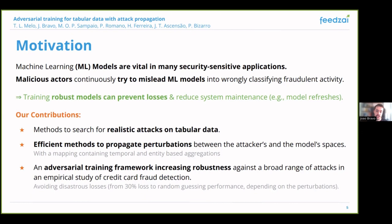To this end, we propose a method to generate realistic attacks on tabular data, a method to propagate perturbations between the features that an attacker can manipulate and the engineered features that the model uses, and an adversarial training framework to increase the robustness of a machine learning model against a broad range of attacks. In an empirical study on credit card fraud detection, we show that this can avoid disastrous losses in the face of some stronger perturbations.